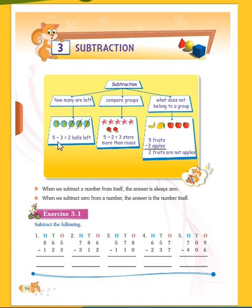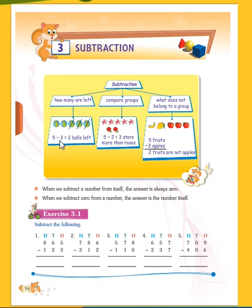Let's see — here we have balls. How many balls do we have? One, two, three, four, and five — we have a total of five balls. Five minus three means we have to remove three balls. Let's cross them out: one, two, three. The remaining is two. So five minus three equals two. There are two balls left.